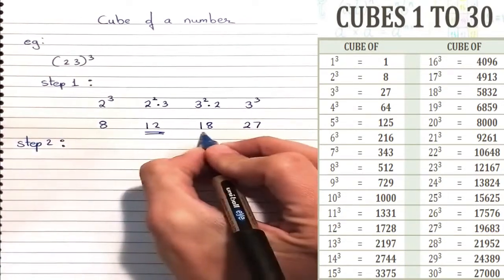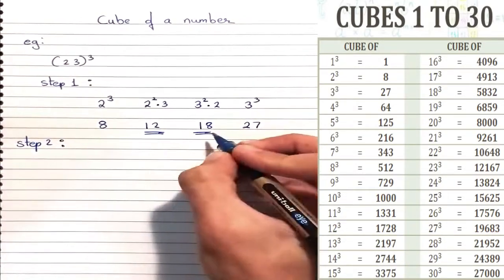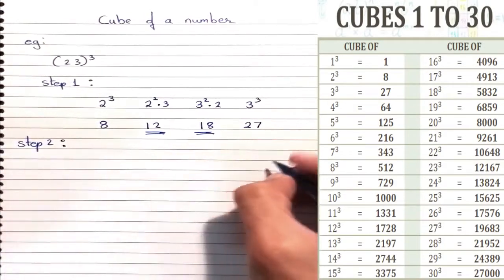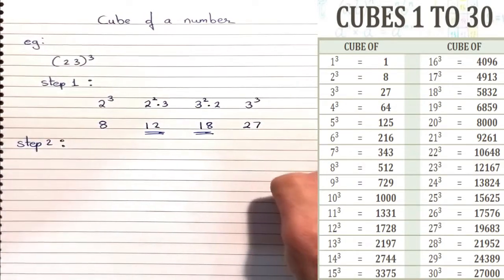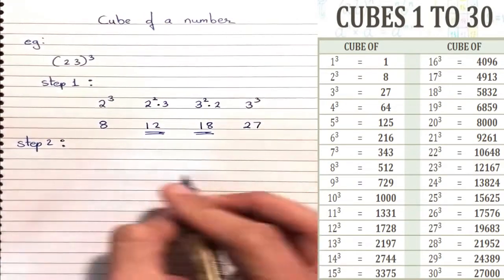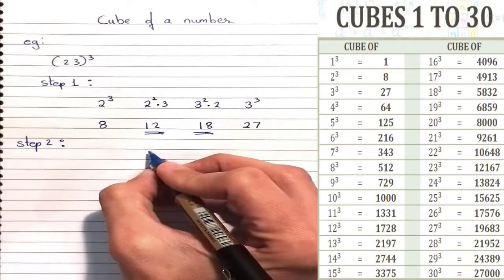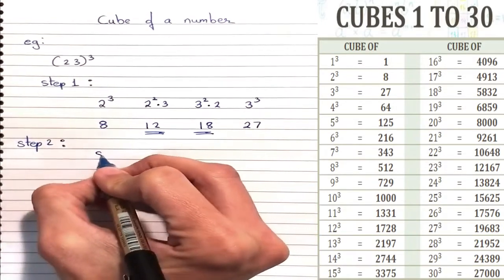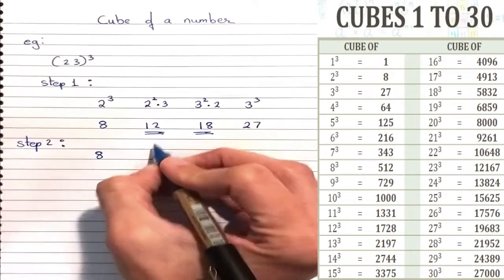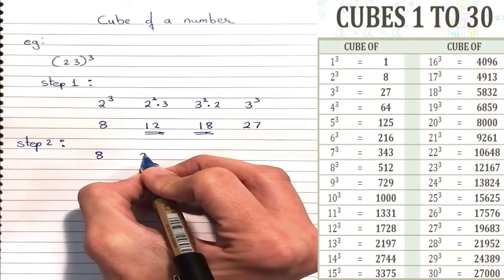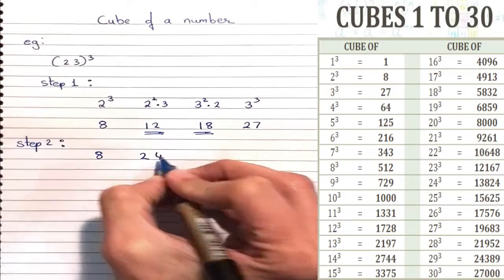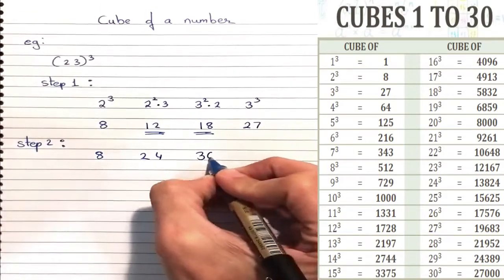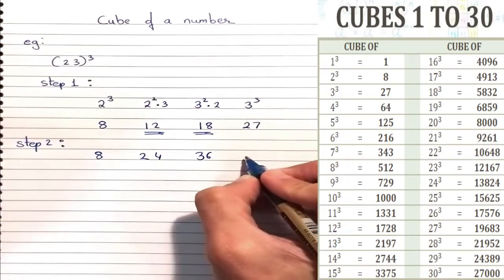Now let's go to step number 2. In this step, we are just going to multiply the middle two numbers by 2. So 12 into 2 is 24 and 18 into 2 is 36.